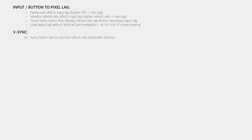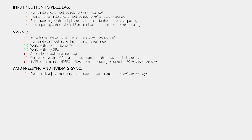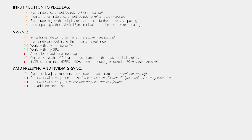VSync syncs your frame rate to the refresh rate of your monitor to avoid tearing. It limits your frame rate to the refresh rate of the monitor. It works with any monitor, TV, and GPU. The downside is that it adds a lot of lag, as seen in the test results. It is only effective when your system can maintain a frame rate higher than the display refresh rate. If your system is unable to maintain the required frame rate, VSync will lock your frame rate to half the display refresh rate. AMD's FreeSync and Nvidia's G-Sync eliminate tearing by dynamically adjusting the monitor's refresh rate to match your system's frame rate. They are not supported by every monitor or graphics card, so check your specifications first. Both add additional input lag and are only effective when the frame rate is lower than the display refresh rate. If your frame rate is higher than the display refresh rate, you will get tearing.